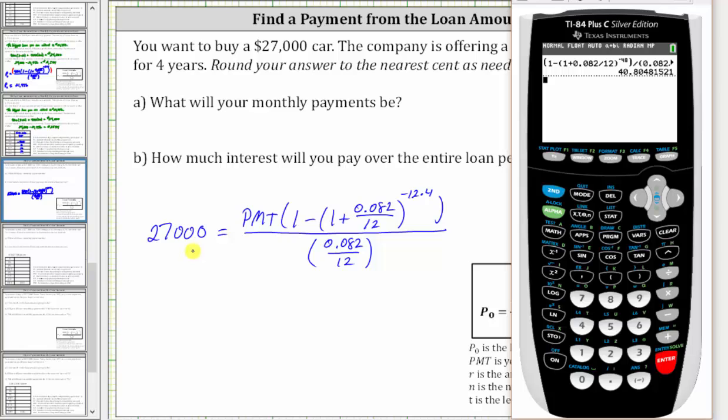Which means now we can write the equation as 27,000 equals PMT times 40.80481521. Let's go ahead and do that.